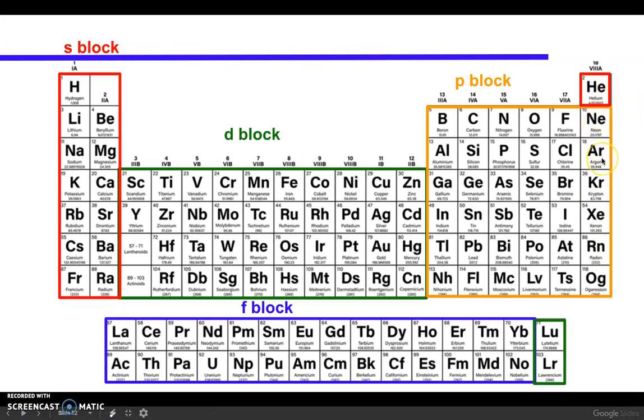And again, whenever you're writing the abbreviated, you need to start with a noble gas. So earlier we started with neon, this time we're starting with argon. Anytime you're doing the abbreviated, you always start with one of these noble gases over here. And we'll talk more about why that is when we get to bonding in our next unit.